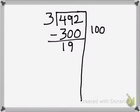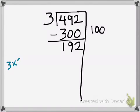That left me with 192. I don't necessarily know a number that I can multiply by 3 to get me to 192, or even close to 192. This is where, off to the side, you can just keep track of multiplication problems and sort of work some guess and check. Try and pick easy numbers that you know you'll be able to work out in your head. So I might just try 3 times 50 off to the side.